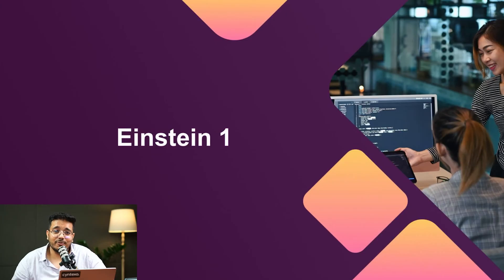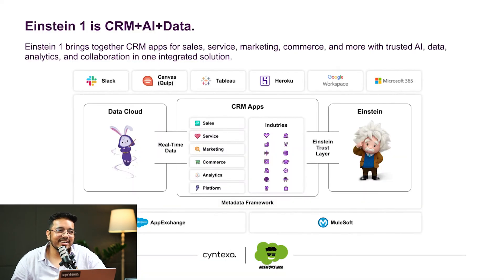We have current and future trends in Salesforce AI. First off, I will like to discuss Einstein One Platform. We have been talking about it a lot. Einstein One Platform is basically CRM plus AI plus data. If you have been following Salesforce, or Dreamforce or any of the Salesforce events, you may have heard about this term. Now it's not Salesforce platform or Force.com platform, what they used to call it — it's just Einstein One Platform.